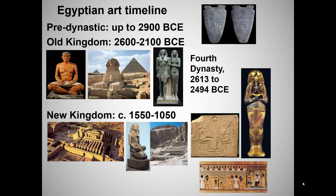I showed you this slide in my introductory lecture. Note that the Palette of Narmer is not Old Kingdom — it's considered pre-dynastic, from the period before the regular dynasties of pharaohs began to be recorded. I've already talked about the Palette of Narmer, so farewell, pre-dynastic Egypt.